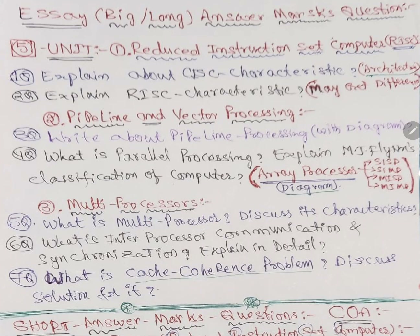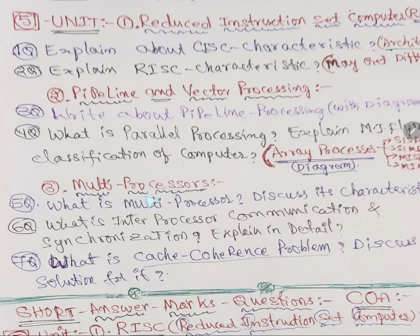We've completed four questions. Watch till the end for tips to pass the exam easily. The third chapter is Multiprocessors — many processors in a single system to increase computer speed. Big companies like Google and YouTube use multiprocessors in their workstations. Question five: 'What is a multiprocessor? Discuss its characteristics.' Question six: 'What is inter-processor communication and synchronization?' — with a diagram. I have already explained these in my videos.